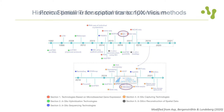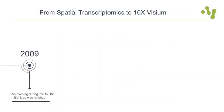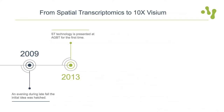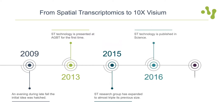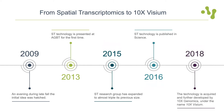It all began one evening during late fall 2009 when Jonas Frisén contacted Joakim Lundeberg about an idea for unbiased RNA analysis in individual neurons in the brain. Development of the technology termed spatial transcriptomics started early 2010. Three years later, the first results were published at AGBT for the very first time, and the term digital pathology was coined — meaning that hematoxylin and eosin staining and gene expression analysis could be performed on the same tissue. In 2015 the research group had expanded to almost triple its size, and finally in 2016 the method was published in Science. At the end of 2018, the technology was acquired and further developed by 10x Genomics under the name 10x Visium.